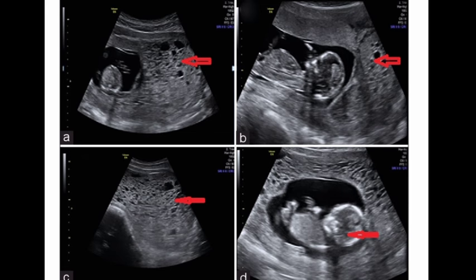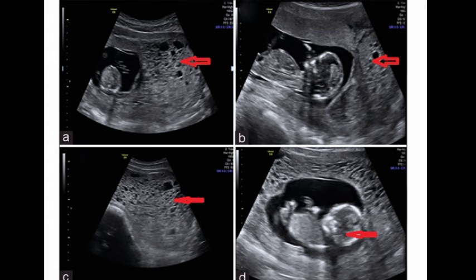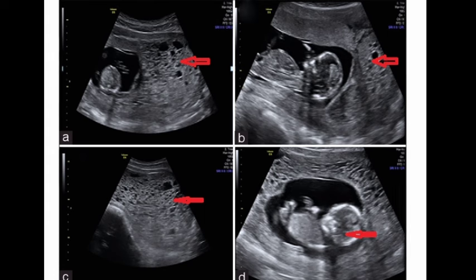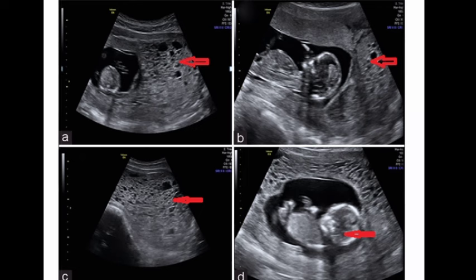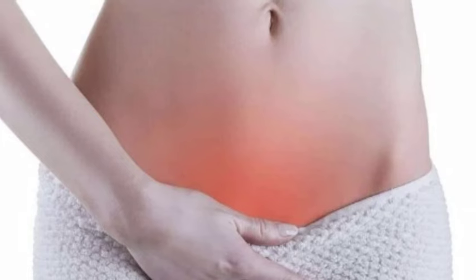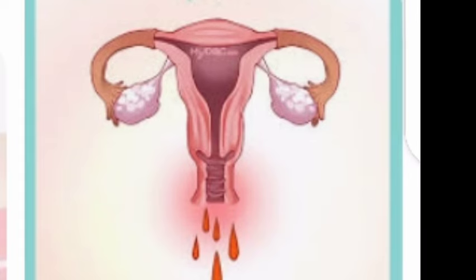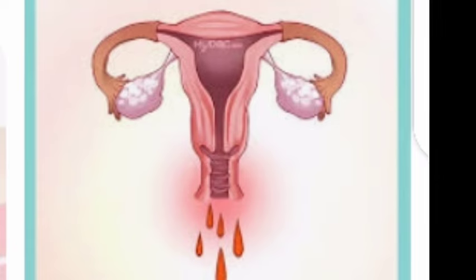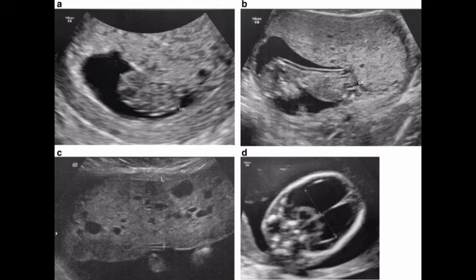We are dealing with partial hydatidiform mole. Partial hydatidiform mole is a type of molar pregnancy, which in turn falls under the spectrum of gestational trophoblastic disease. Clinical signs and symptoms such as abdominal pain, cramps of the lower abdomen, and vaginal bleeding during pregnancy are common but nonspecific. The uterus is often large for gestational age, and fetal heartbeat is usually absent.